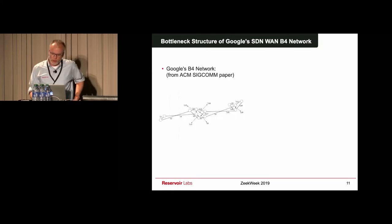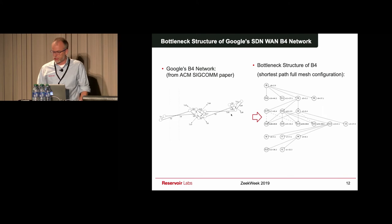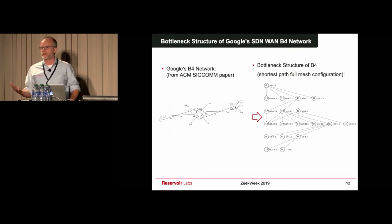Let me give you another example. This is Google's B4 network, which is an SDN WAN network that connects globally Google's largest-scale data centers. In this case, it connects 12 data centers. So you can ask, what is the bottleneck structure of this network? If you look at link one, it's a leaf in the bottleneck structure, so the region of influence of link one is basically empty. That makes sense because this link is isolated from the network.